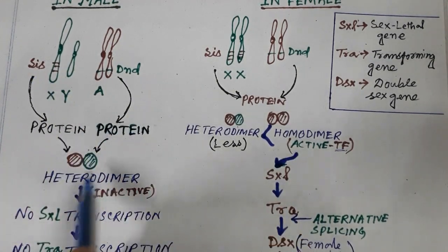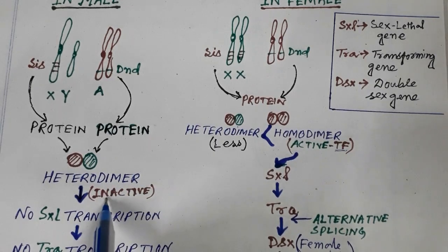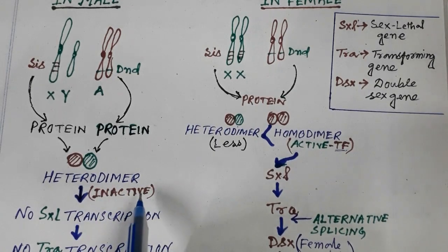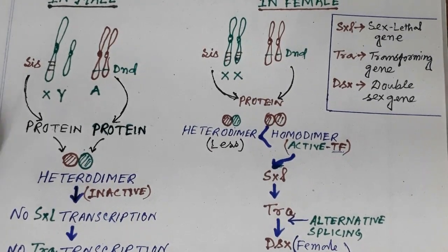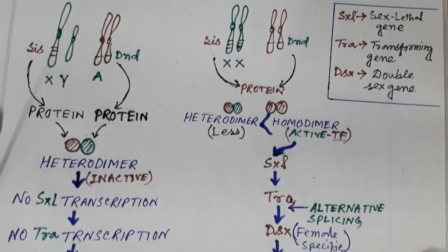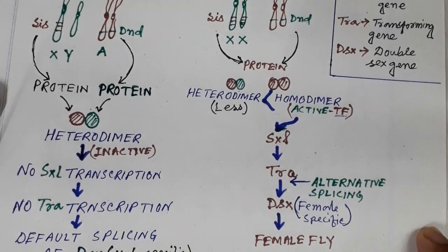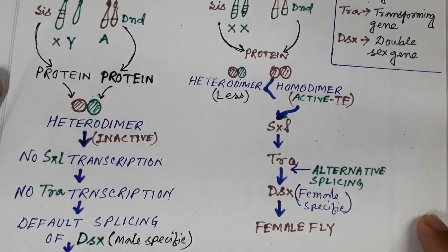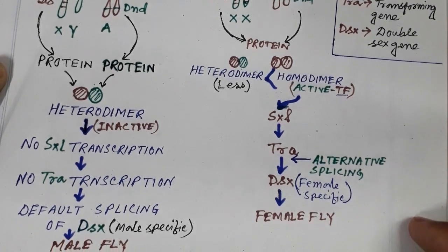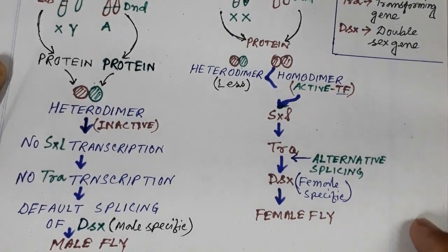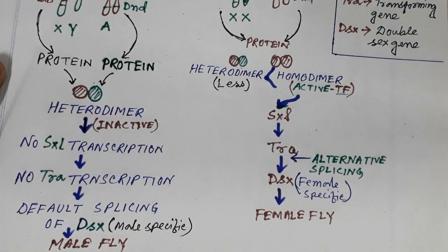What is needed is hetero dimer formation, which results in an inactive transcription factor. If you have default splicing, you get a male-specific protein and a male fly. This summarizes the molecular basis of sex determination in Drosophila.